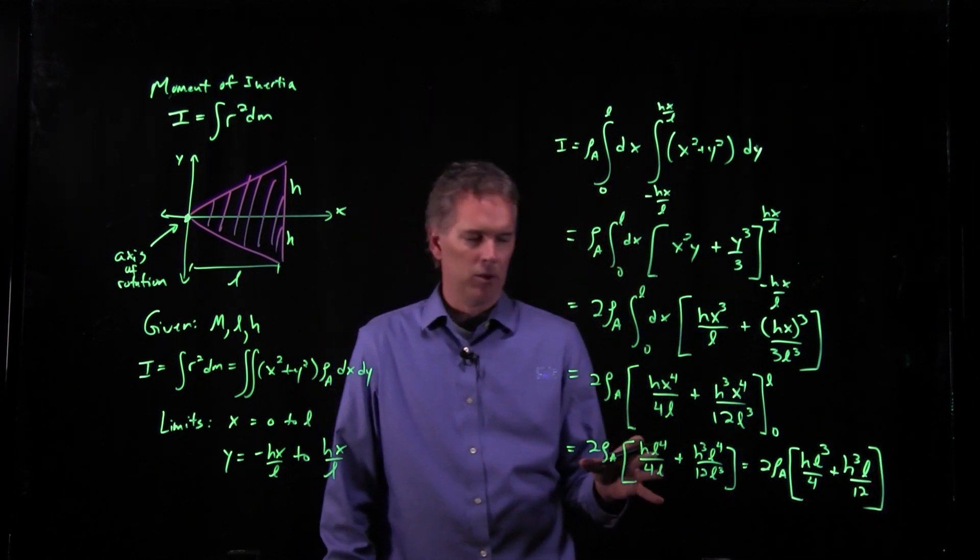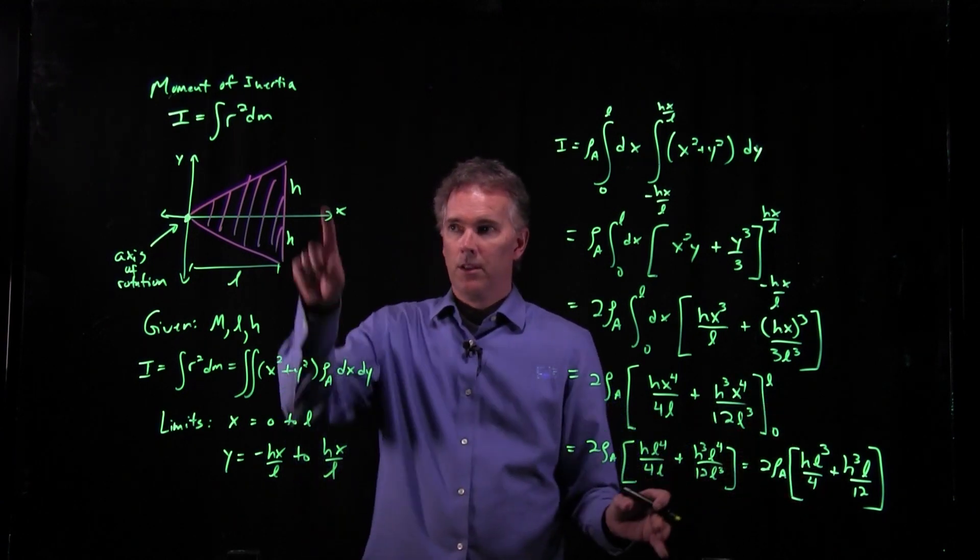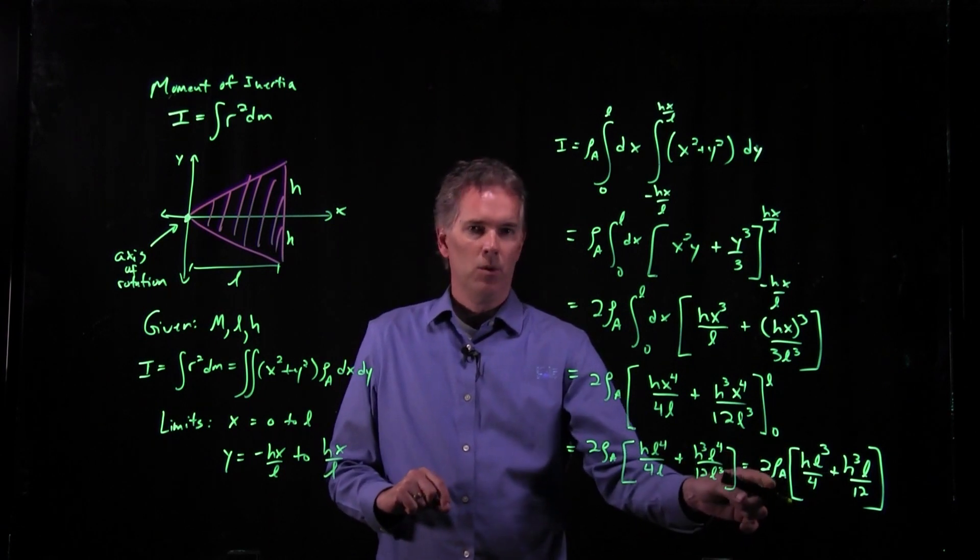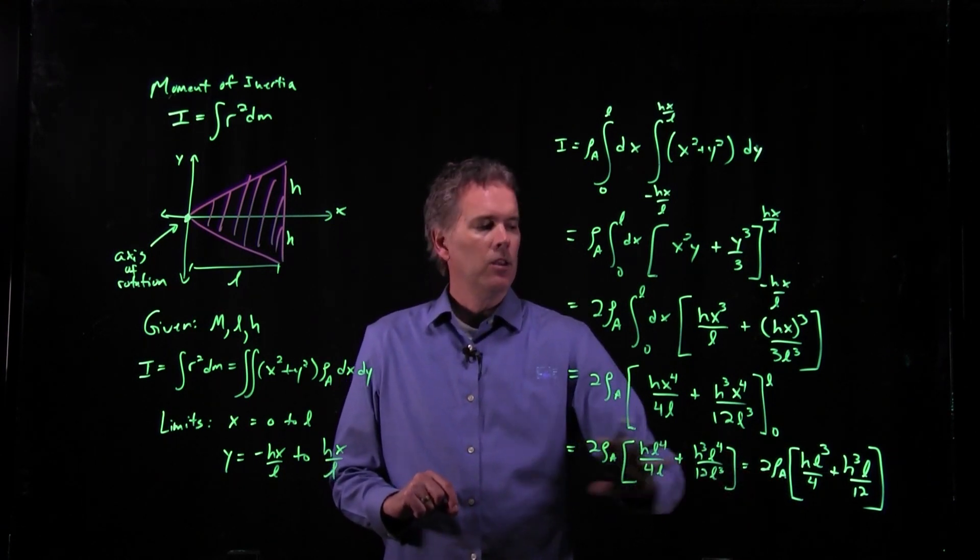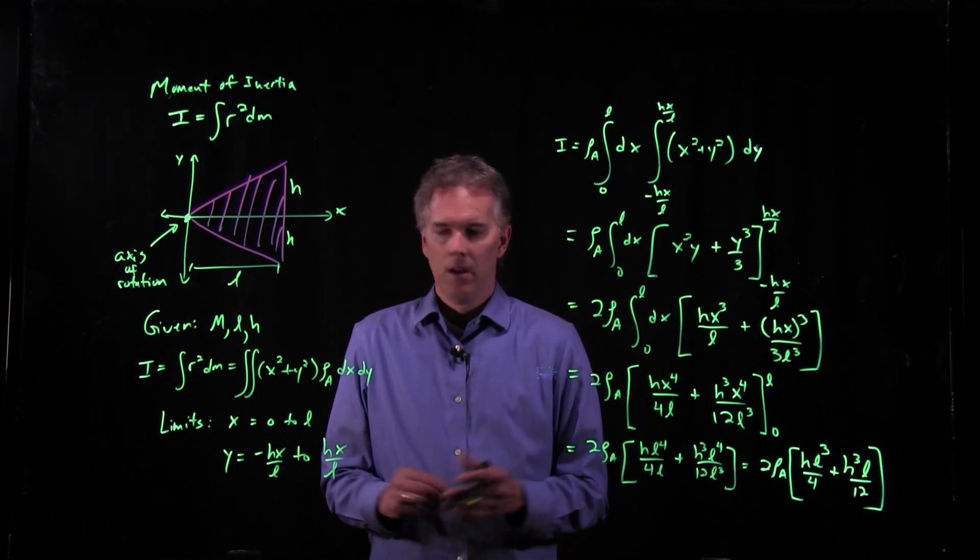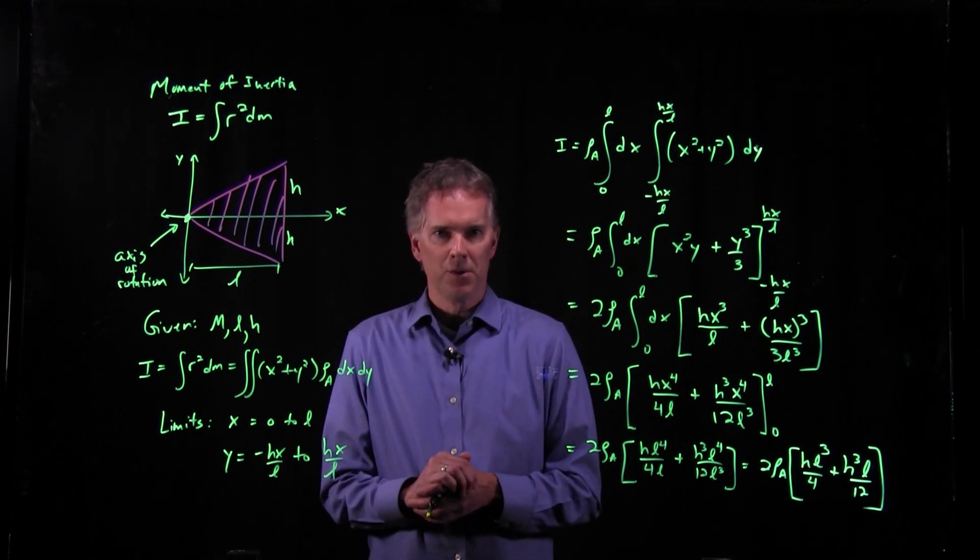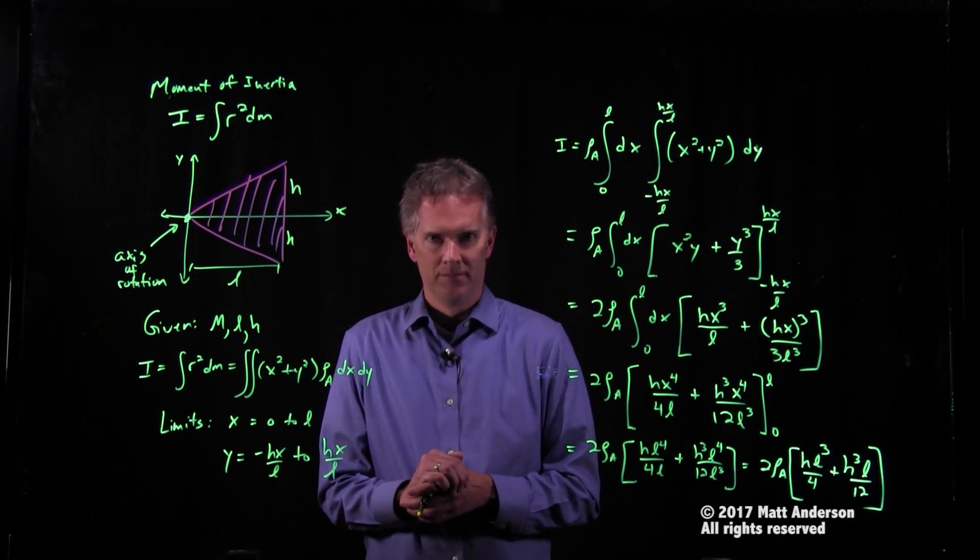You can simplify that a little bit more if you like, but that is our answer. You have numbers for h. You have numbers for L. You have already calculated what rho_a is. You can plug it in and check out what your numerical answer is. Alright, so that's how you approach that problem. Complicated one, but doable. If you have any questions, definitely come see me in Office Hours. Cheers.